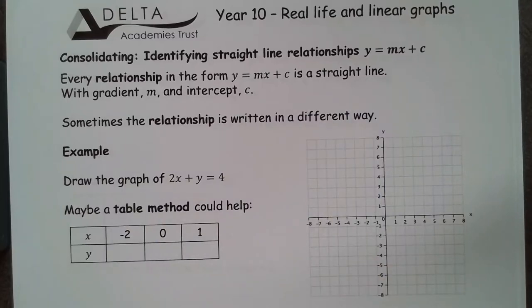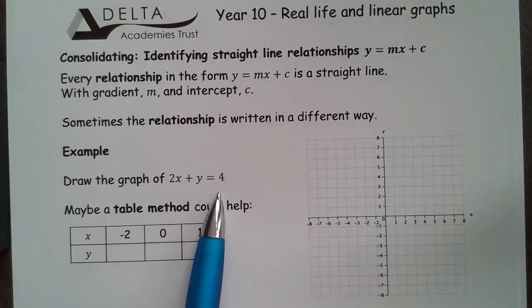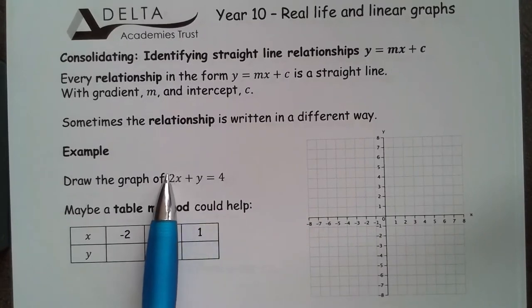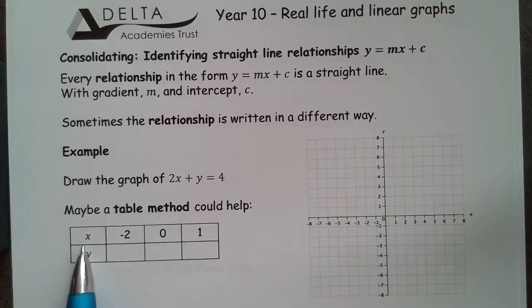We have to think about this slightly differently, but we can start from the same point we did last week with a table. So, looking at this equation, we've got 2x plus y equals 4. This means that double the x coordinate plus the y coordinate is going to give me 4. So I'm going to construct a table. I've picked 3 coordinates already, negative 2, 0 and 1, just to see what we're dealing with.